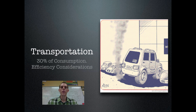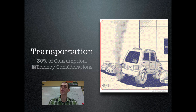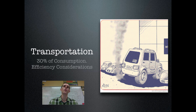Transportation accounts for 30% of our energy consumption in America — both transporting goods and people. When considering efficiency per trip, the more people riding in a vehicle the more efficient it is, because it takes about the same energy to move a vehicle whether one person or fifty are riding in it. So the total energy consumed can be divided across 50 people in a bus, meaning each person uses far less energy per capita than someone driving alone in a car.